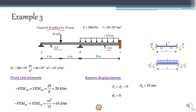The first thing to do is find out the fixed end moments. Before that, the value of EI is also given. E is 200 GPa, which is 200 × 10⁶ kN/m². I is given as 50 × 10⁶ mm⁴, which needs to be converted to m⁴ by multiplying by 10⁻¹².